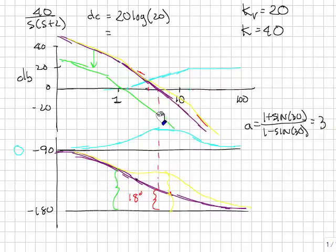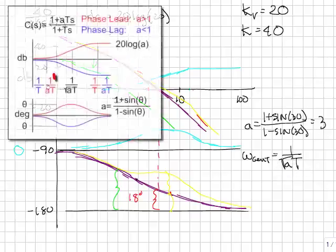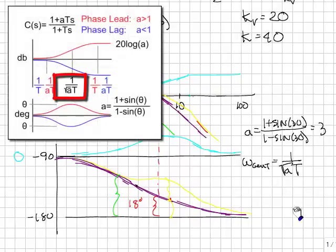Now I need to know the center point for the controller. To do that, I'm going to use this formula where the center frequency is 1 over the square root of A times T, and T is the other parameter that I need for the controller. I need to figure out what center frequency I want to use.